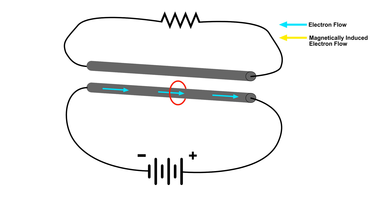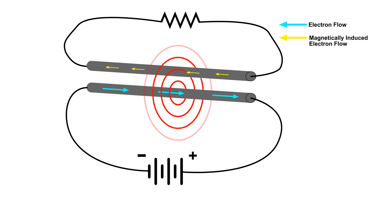And as it cuts across the wire at the top, it induces a current in the wire. But notice the direction of the current. Now the magnetic field has stopped, and just like before, even though this is the opposite magnetic field, since the magnetic field is not moving, there is no current in the top wire.